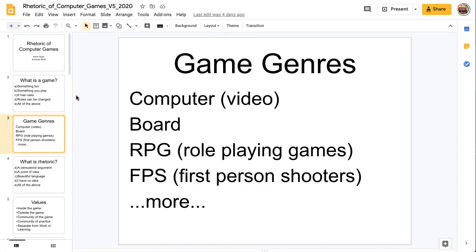Now there's many different kinds of games, they're called game genres. There's computer games, there's board games, there's role-playing games, first-person shooters. There's many different kinds of games that children play and adults play.